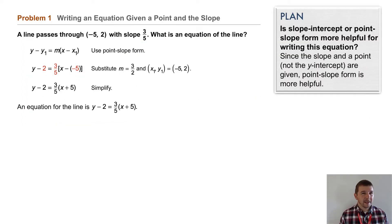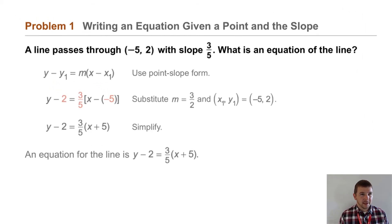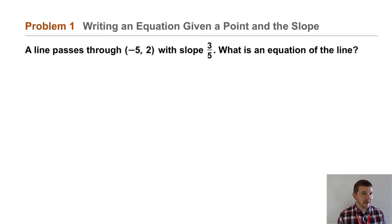Problem 1, writing an equation given a point and the slope. A line passes through the point (-5, 2) with slope 3/5. What is an equation of the line?